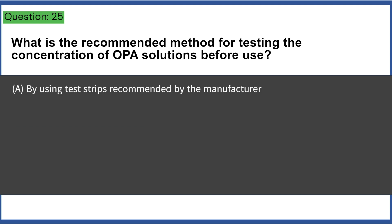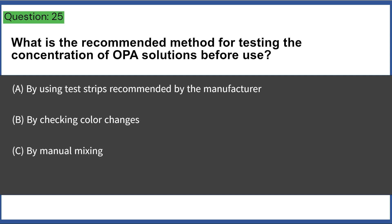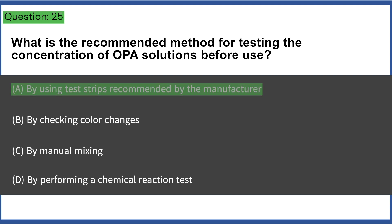What is the recommended method for testing the concentration of OPA solutions before use? a) by using test strips recommended by the manufacturer, b) by checking color changes, c) by manual mixing, d) by performing a chemical reaction test. Answer: A, by using test strips recommended by the manufacturer.